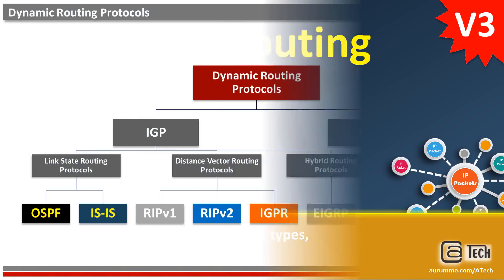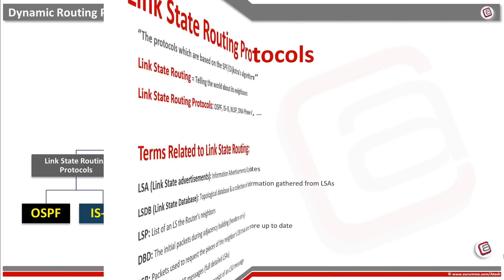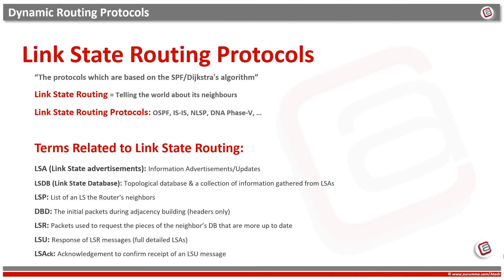Link state routing protocols fall under the category of IGP, which are Interior Gateway Protocols. There are two important types: OSPF and ISIS, with OSPF being the most common. Link state routing protocols use SPF, or Dijkstra's algorithm, for best path selection using SPF tree methodology. Link state routing means telling the whole world about your neighbors.